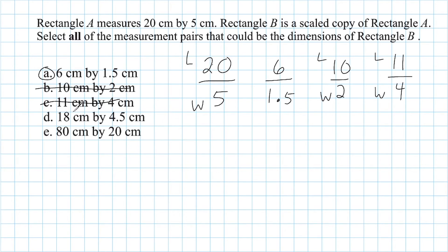For option D, we have a length of 18 as compared to a width of 4.5. And 18 is exactly 4 times bigger than 4.5. So D is, in fact, proportional or similar to rectangle A.